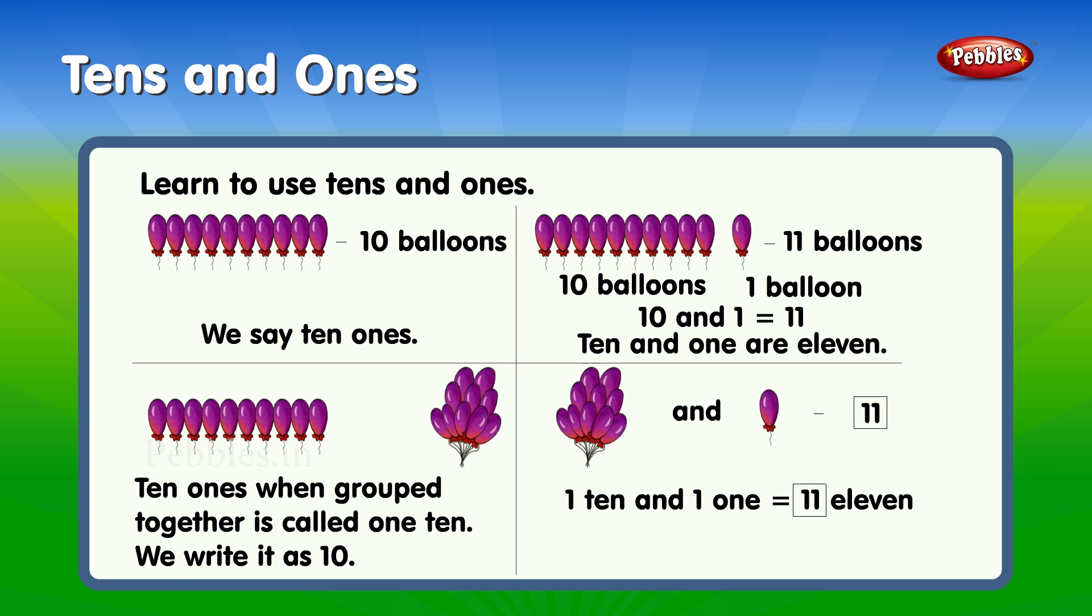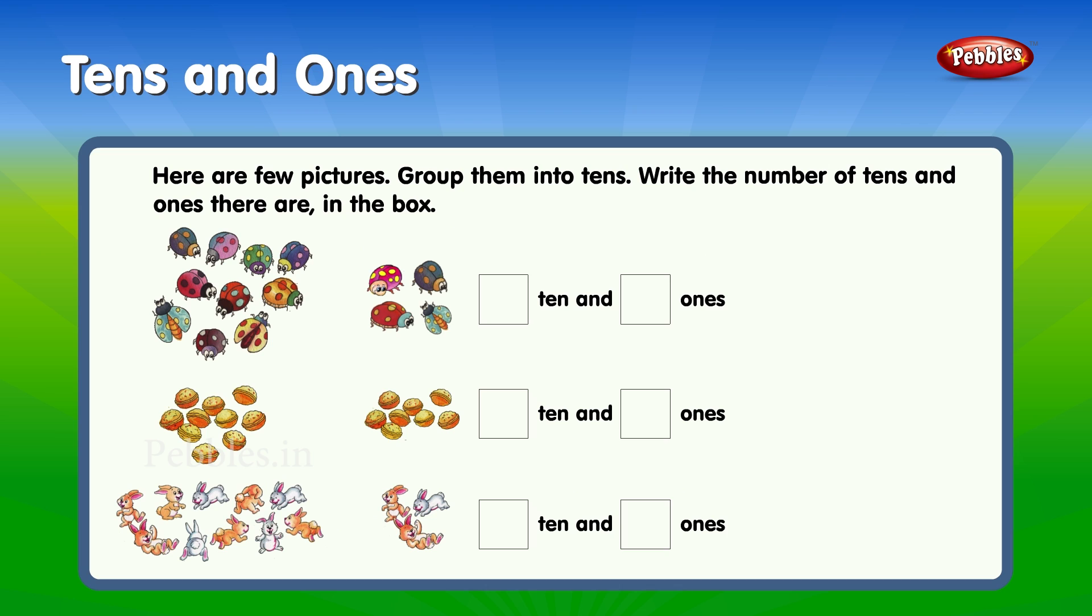Here are a few pictures. Group them into tens. Write the number of tens and ones there are in the box. One ten, ten and four ones. One ten and eight ones. One ten and three ones.